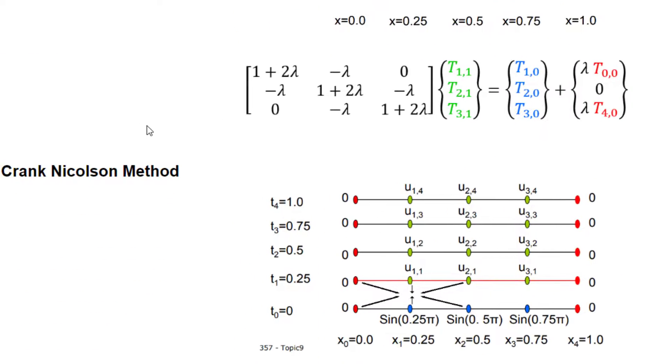The Crank-Nicolson method is very similar. The only difference is instead of using four points, we will now be using all six points here. It's like a combination of the explicit and the implicit method. And this increases the accuracy. The mechanism is still the same as the implicit method. You have one equation in which you have six terms, but two unknowns. Two of them are unknowns.